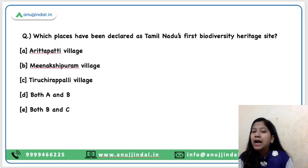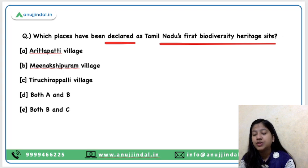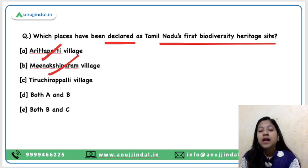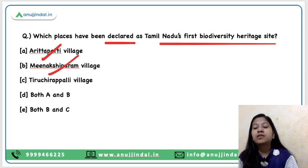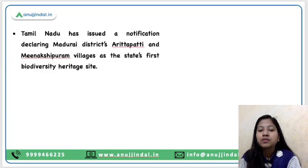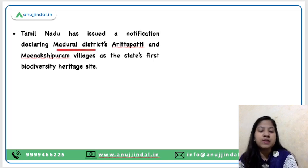That was question number two. Now on question number three: which places have been declared as Tamil Nadu's first biodiversity heritage site? Arithapatti village and Meenakshi Puram village have been declared as the first biodiversity heritage site of Tamil Nadu, and both of these villages are part of the Madurai district.